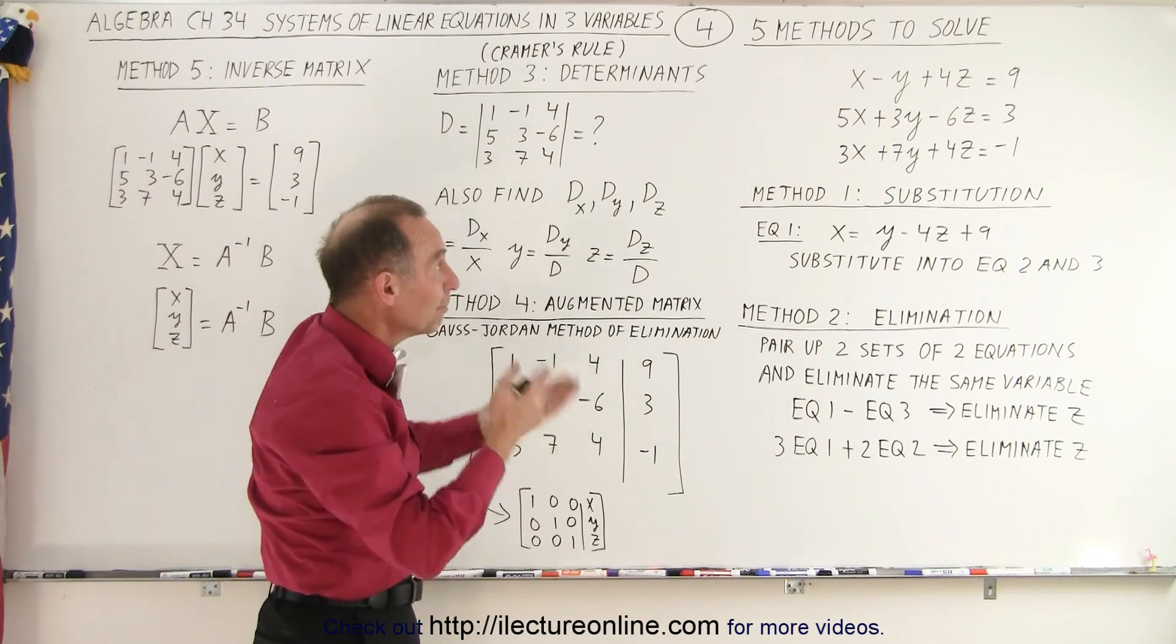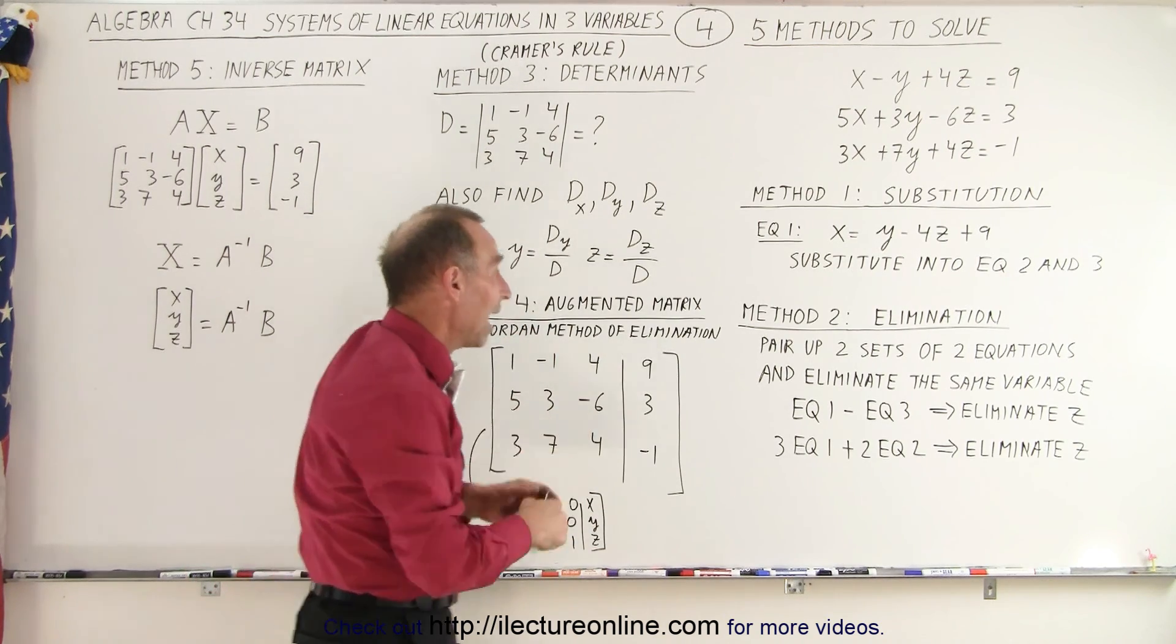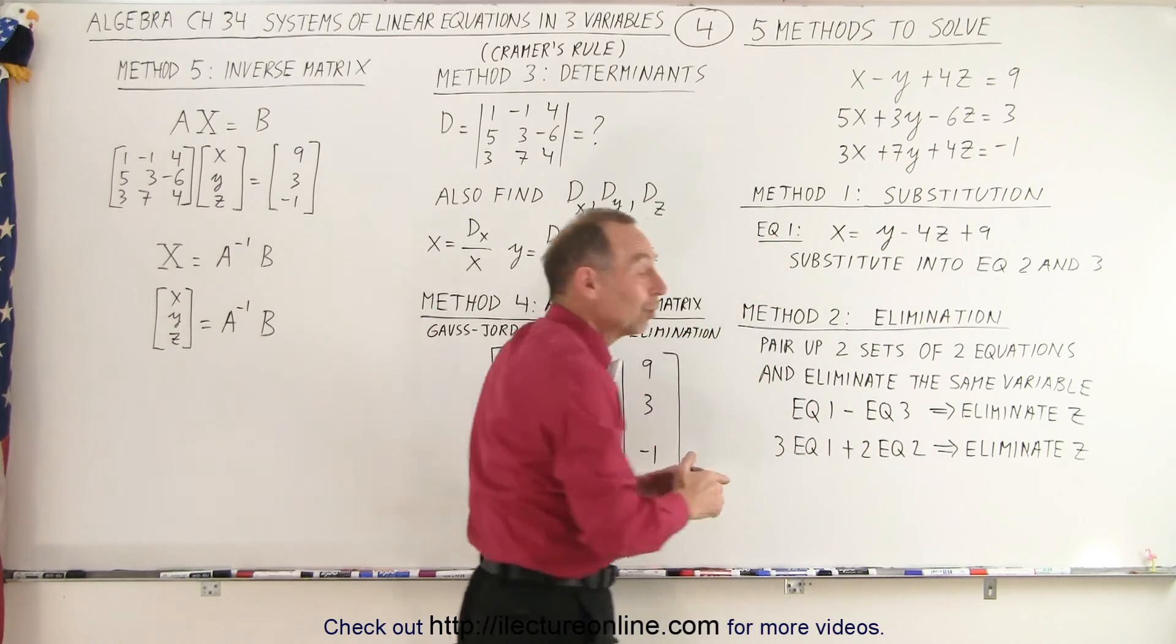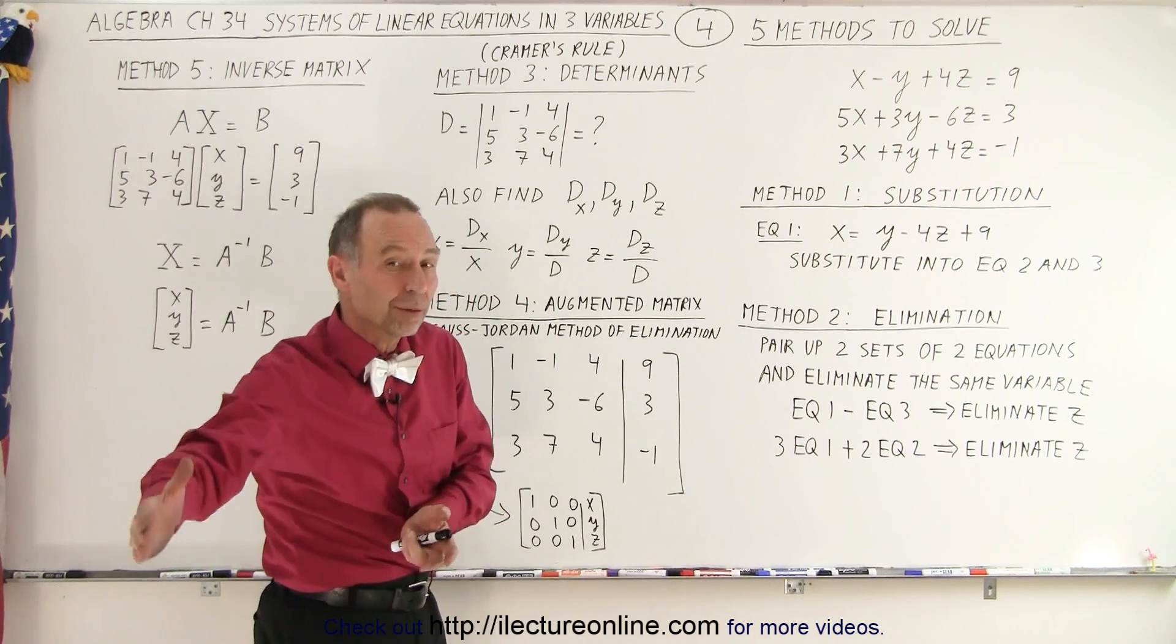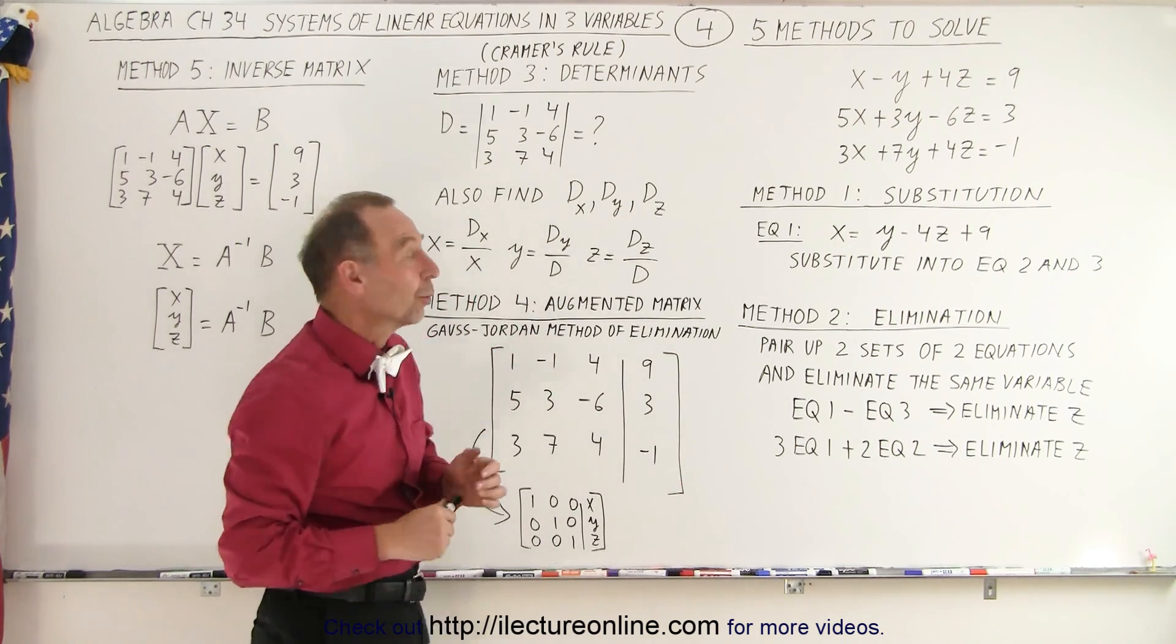So you can see that either method will end up with two equations and two unknowns. You don't have to use both of them together. You can use this method or this method. So you end up with two equations where one of the variables has been eliminated. And at that point, you can solve the two equations, two unknowns.